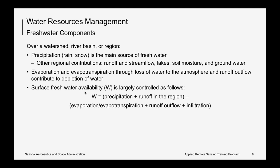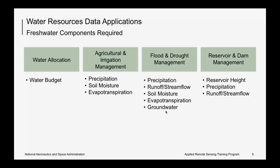For water resources management, freshwater components are very important. Over a watershed, river basin, or region, precipitation is the main source of freshwater. Regionally, runoff, stream flow, lakes, soil moisture, and groundwater also contribute to freshwater. Evaporation and evapotranspiration form loss of water to the atmosphere, and runoff also outflows water from a given region. Surface freshwater, denoted as W, is controlled mainly by precipitation and runoff in the region, subtracted by evapotranspiration, runoff out of the region, and infiltration into the ground. Each of these components must be known for water resources management.